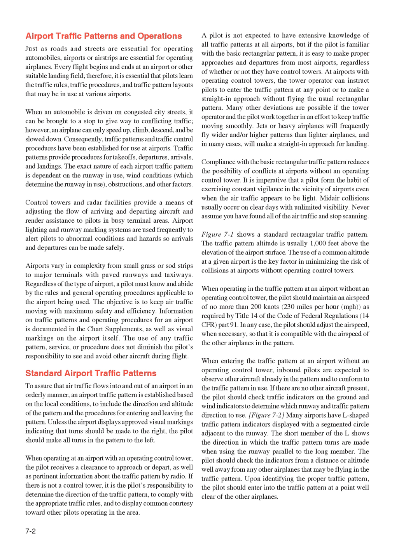Airports vary in complexity from small grass or sod strips to major terminals with paved runways and taxiways. Regardless of the type of airport, a pilot must know and abide by the rules and general operating procedures applicable to the airport being used. The objective is to keep air traffic moving with maximum safety and efficiency. Information on traffic patterns and operating procedures for an airport is documented in the chart supplements, as well as visual markings on the airport itself. The use of any traffic pattern service or procedure does not diminish the pilot's responsibility to see and avoid other aircraft during flight.